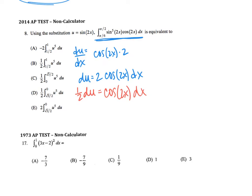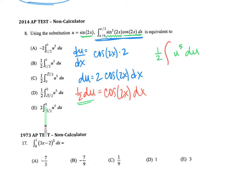Now I'm going to rewrite my integral in terms of u. Instead of writing sine of 2x to the 5th, sine of 2x is my u, so I've got u to the 5th. Cosine of 2x dx is going to be replaced with 1/2 du. That's looking like a lot of the setups b, c, and d. I don't like the negative 2 or the 2 on a and e.